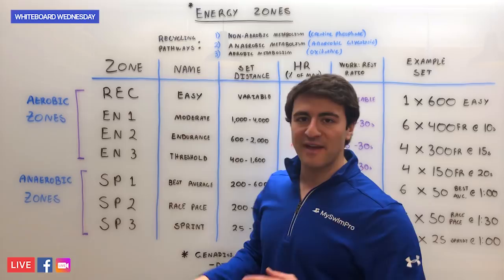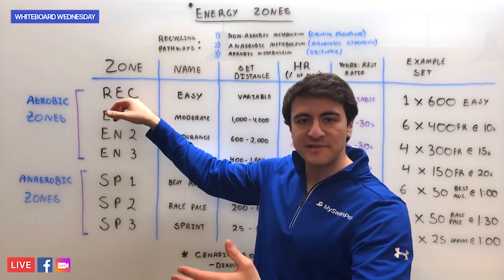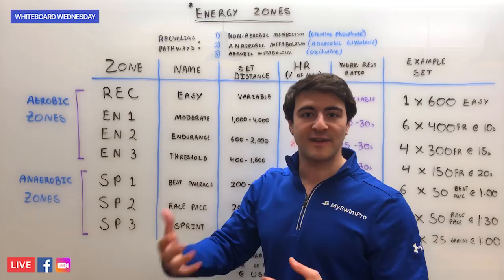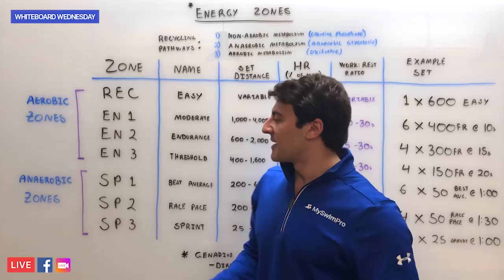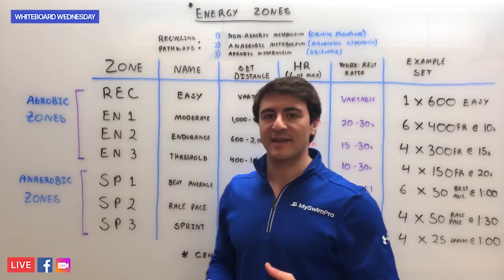Looking at the seven zones: REC is short for recovery — this is the first zone, the lowest heart rate. After recovery you have EN1, EN2, and EN3 — Endurance 1, Endurance 2, Endurance 3 — and these four round out the aerobic zones. The anaerobic zones are SP1, SP2, and SP3 — Sprint 1, Sprint 2, Sprint 3 — and these are higher intensity.